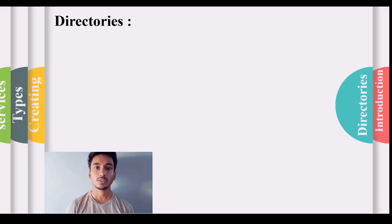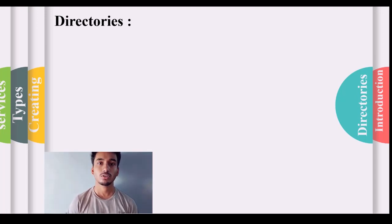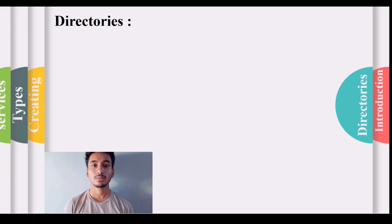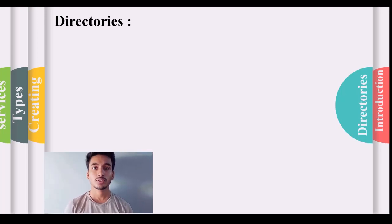Directory structure: UNIX uses a hierarchical file system structure, much like an upside-down tree, with root slash at the base and all other directories spreading from there. The UNIX file system is a collection of files and directories. It has a root directory slash that contains other files and directories. Each file or directory is uniquely identified by its name and inode number.